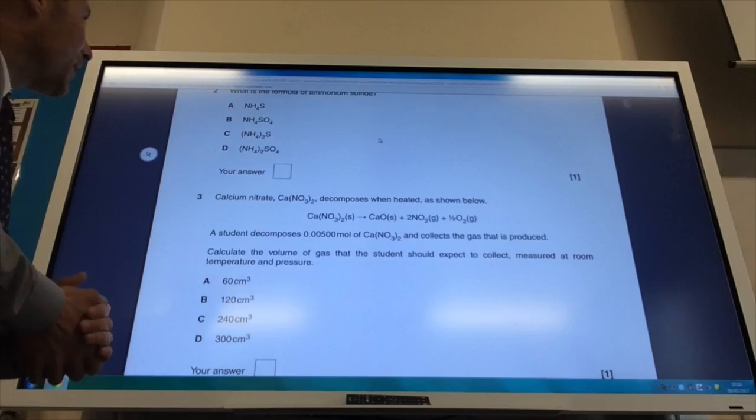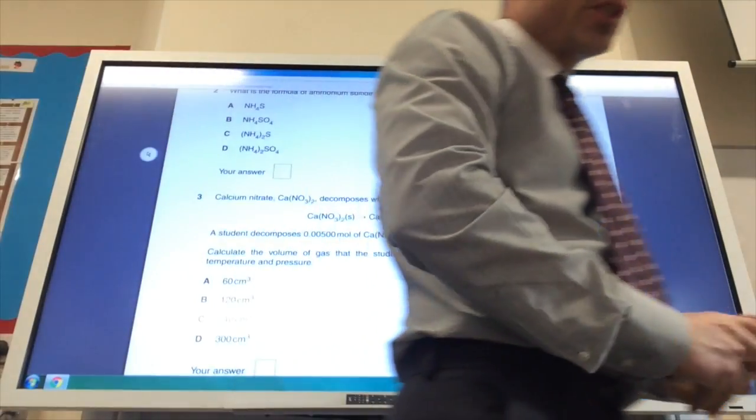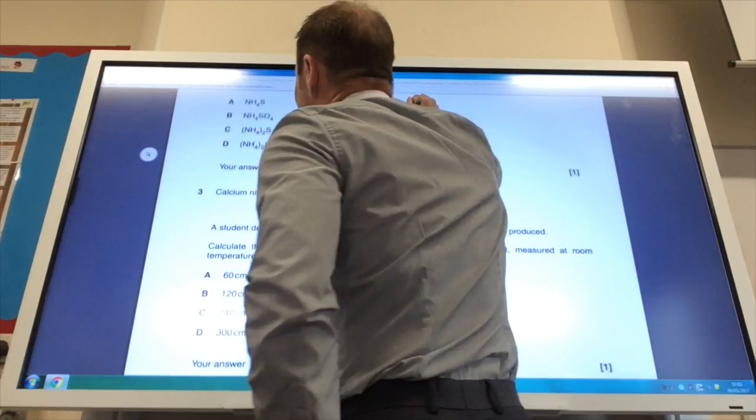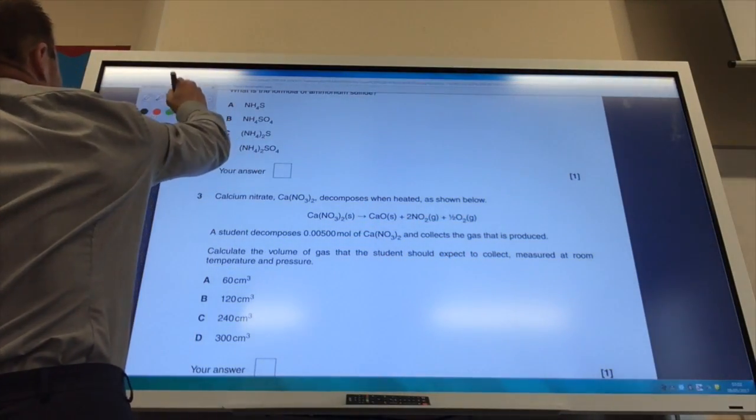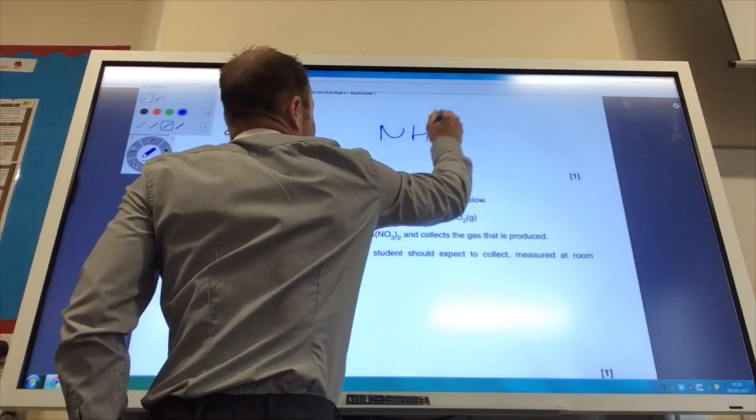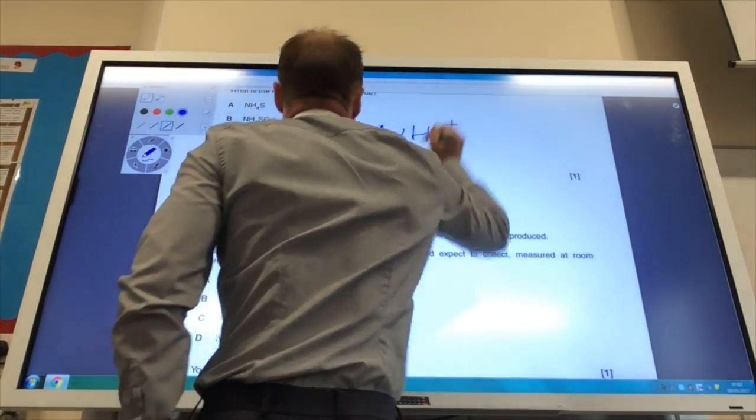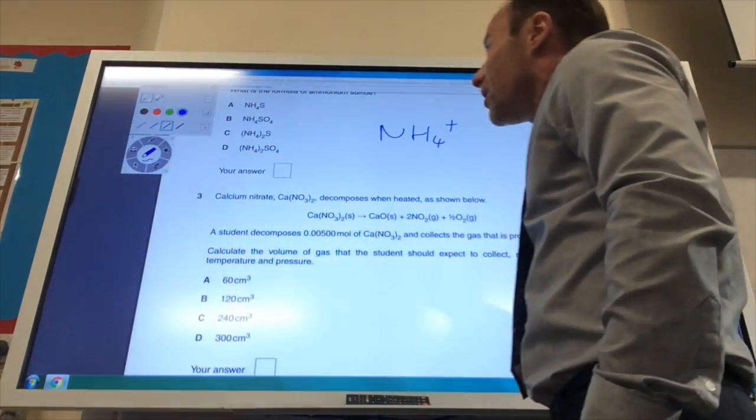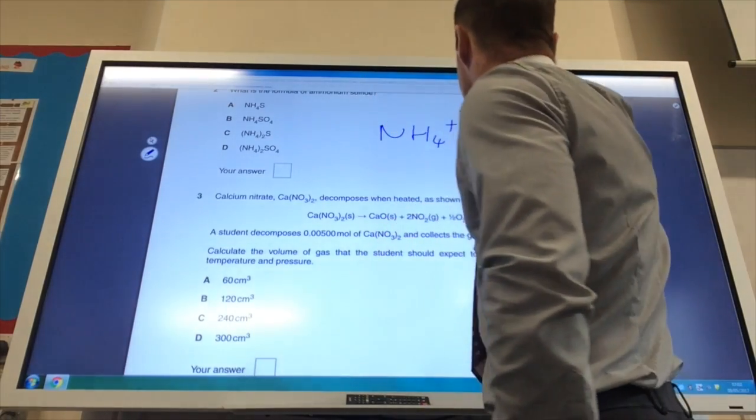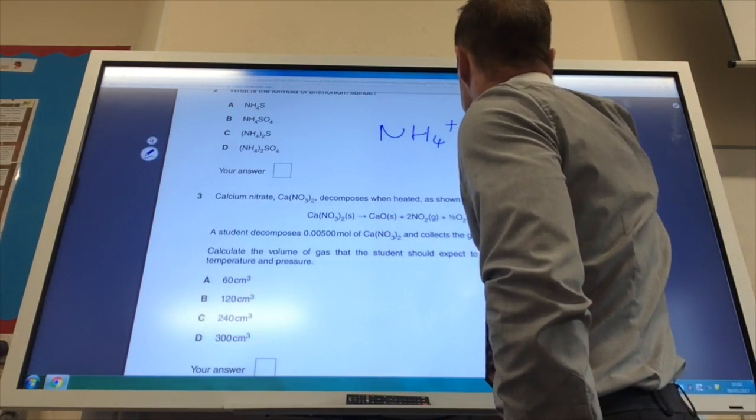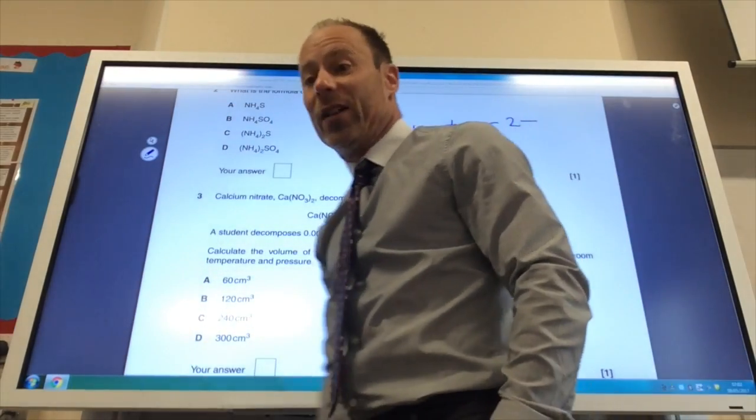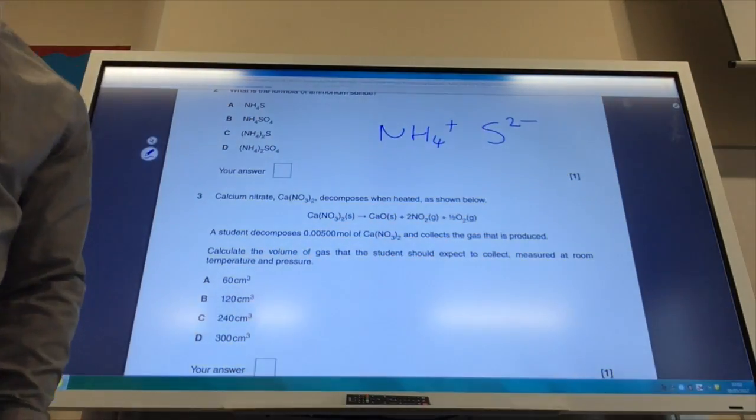For the next one, what is the formula of ammonium sulfide? The ammonium ion is NH4 plus, the sulfide, sulfur is in group 6 so it's S2 minus, and therefore I need 2 of those for every sulfide ion, so the answer to 2 is C.